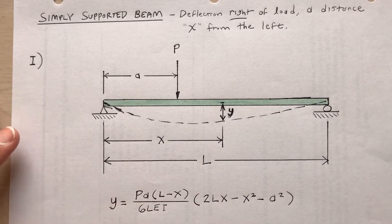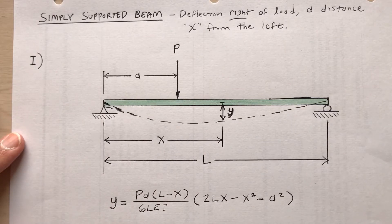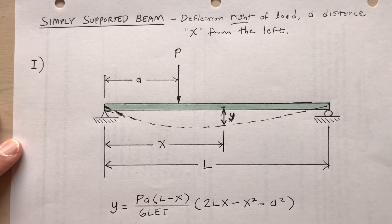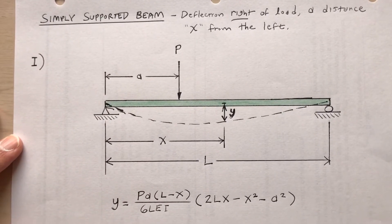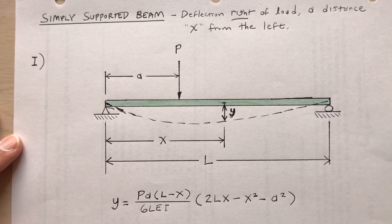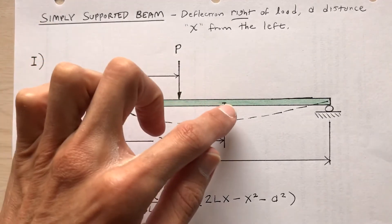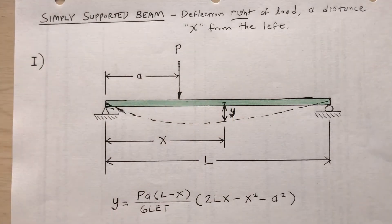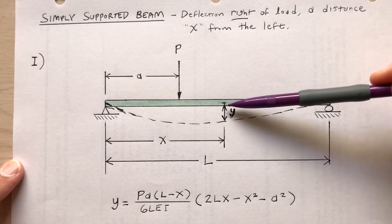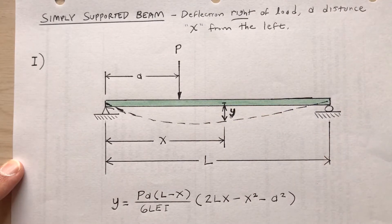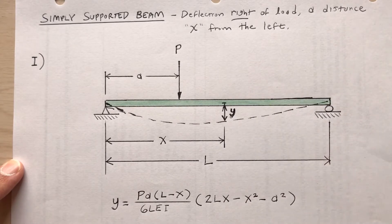The formula tells us how much displacement there is at location x from the left side, assuming a simply supported beam. In this first case, the applied load P is to the left of the location we're interested in. If the applied load is instead to the right of the location we're interested in, we use a different formula.